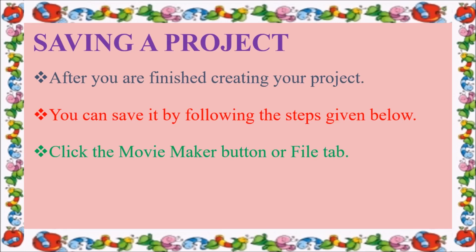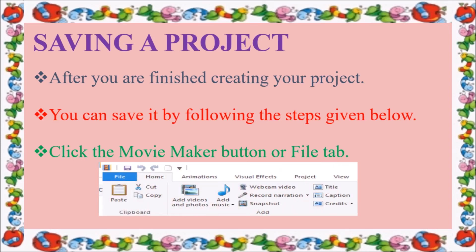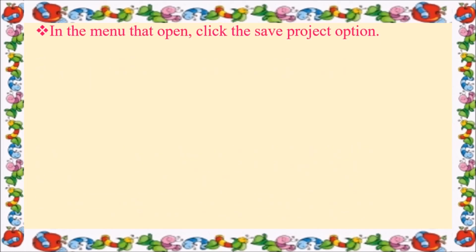From the file tab options, you can go to Save As. The file tab is indicated by a blue color. Go to click this file tab or Windows Live Movie Maker button. The options available are: Save, Save As, Open, New Project. Then, in this menu that opens, click the Save Project option.